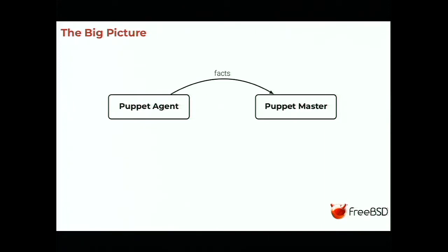Let's see how Puppet works. Basically, in your infrastructure you have two kinds of nodes: Puppet agents installed on all your nodes, and a Puppet master. Every half an hour by default, a Puppet agent will collect facts — for example, its name, IP addresses, the quantity of RAM it has, etc. — and send these to the Puppet master. The Puppet master will use these facts on a configuration file called the manifest and build the expected configuration of that node, which is called a catalog.